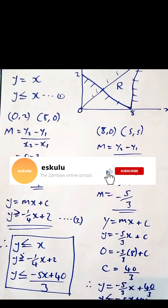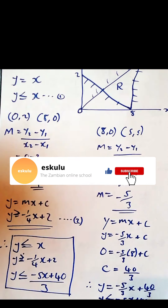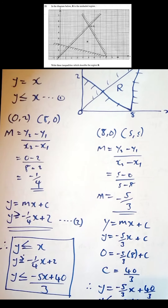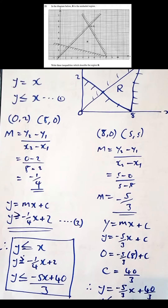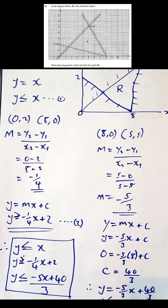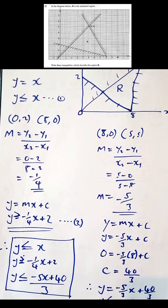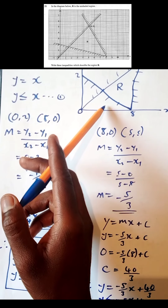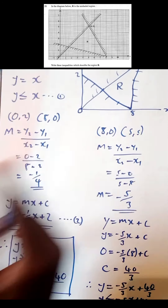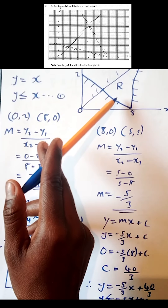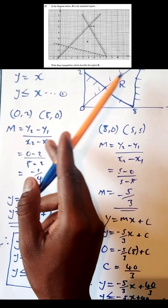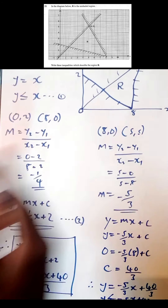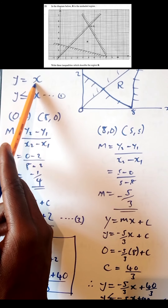We move on to question number 21: linear programming. These topics you never miss in paper one. With linear programming, you are given a diagram and told to find inequalities which describe the shaded region. There are equations for three lines. The simplest line has equation y = x.